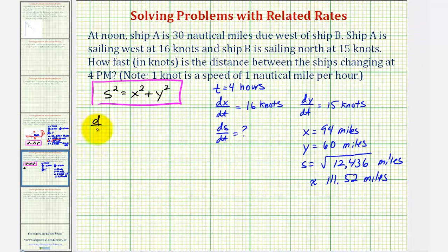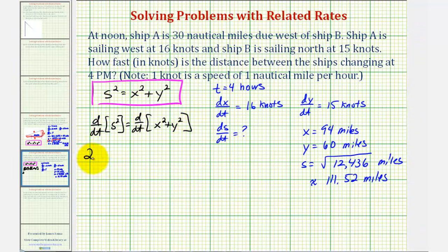So we'd have the derivative of S squared with respect to T must equal the derivative of X squared plus Y squared with respect to T. So that would be 2S times dS/dt equals 2X times dX/dt plus 2Y times dY/dt. Notice we can divide both sides by two.